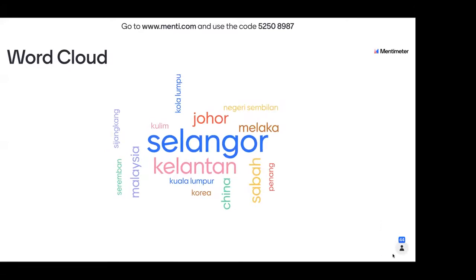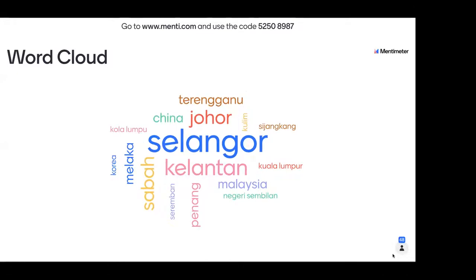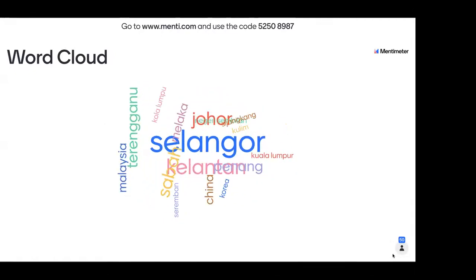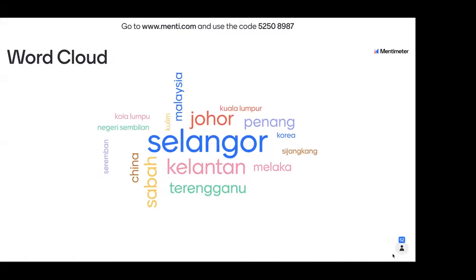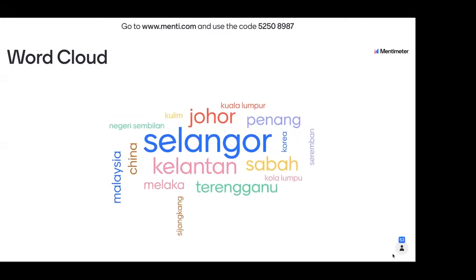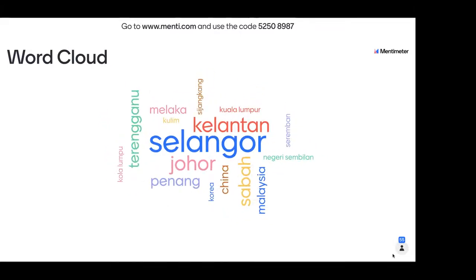Only 44 - we have around 56 here, come on, another 10. Someone needs a spelling lesson. Are we done? No, we have six more people, come on. Okay, so we have around 54 responses. The majority of our class is from Selangor. Outside of Malaysia, we have from Korea and China - China is slightly bigger than Korea, which means we have more from China than from Korea.